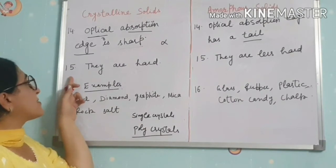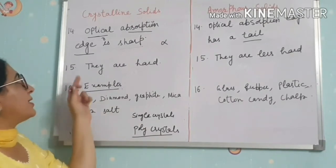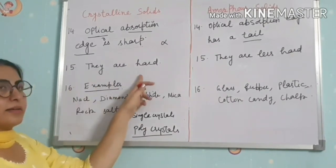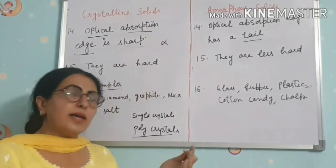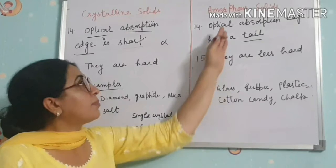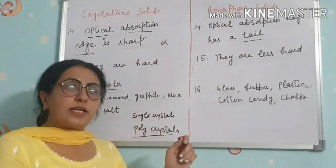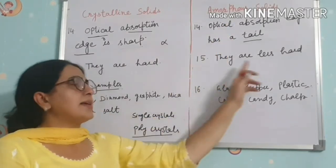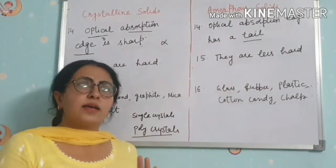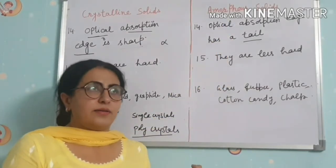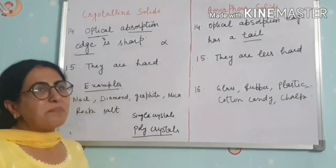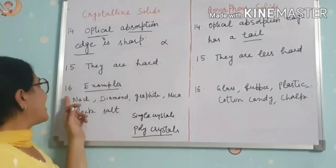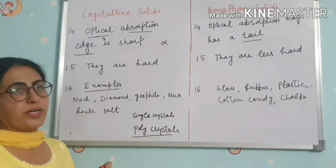The fifteenth point: crystalline solids are hard, while amorphous solids are less hard. The sixteenth and last point covers examples of both types.